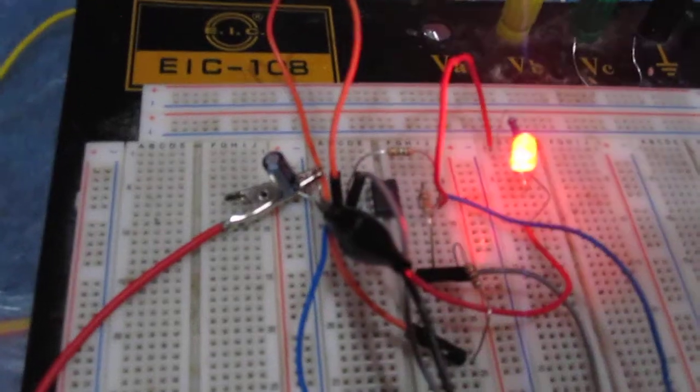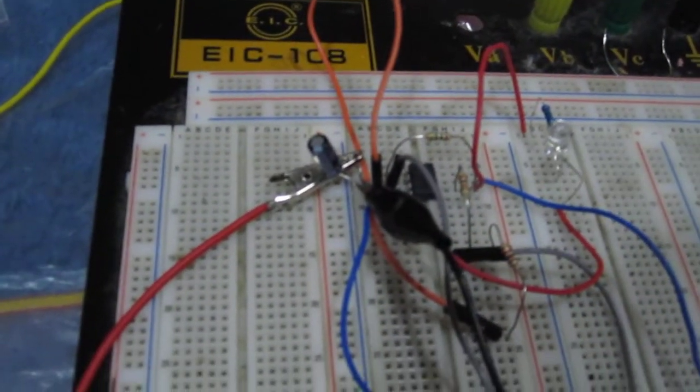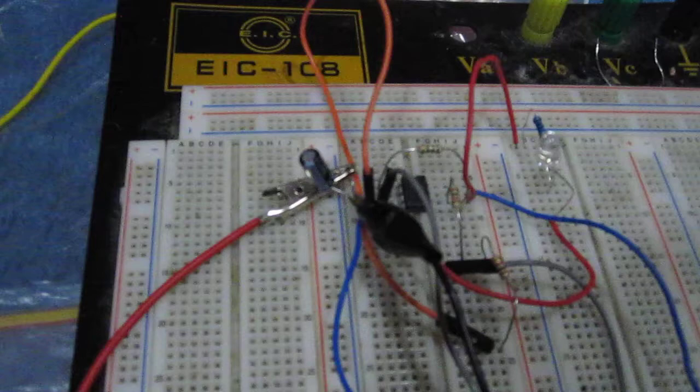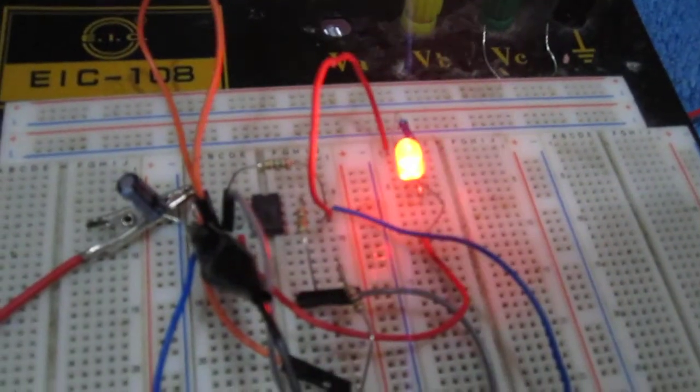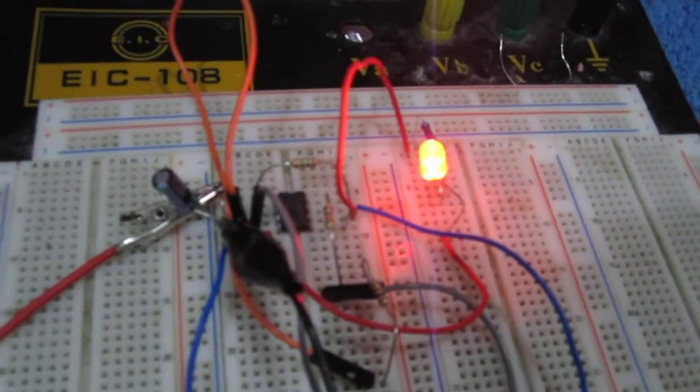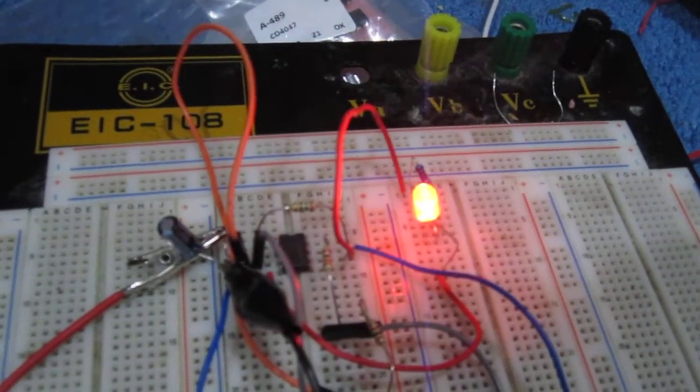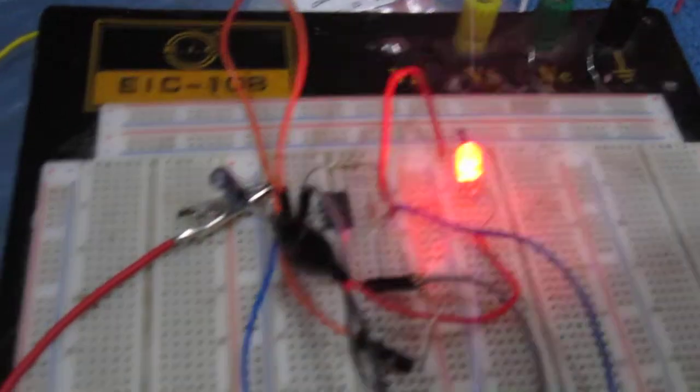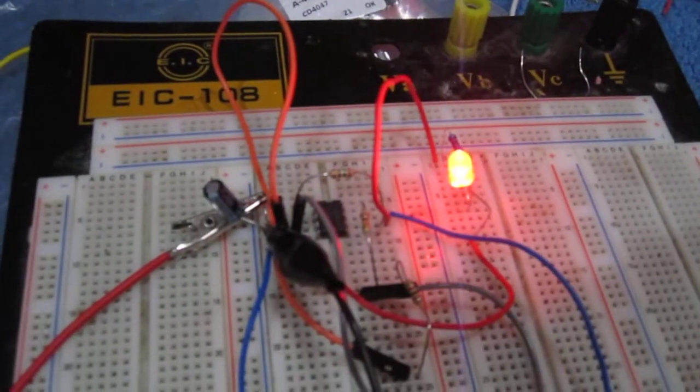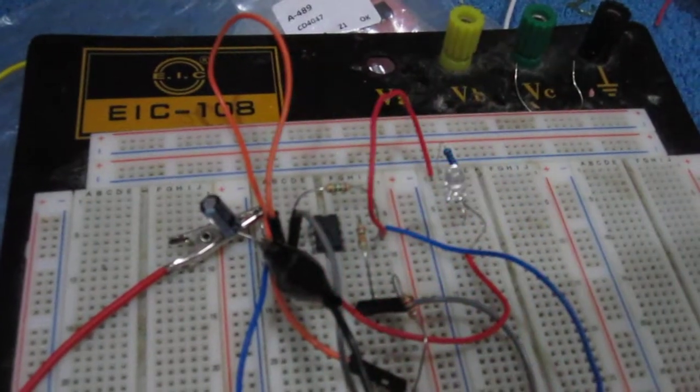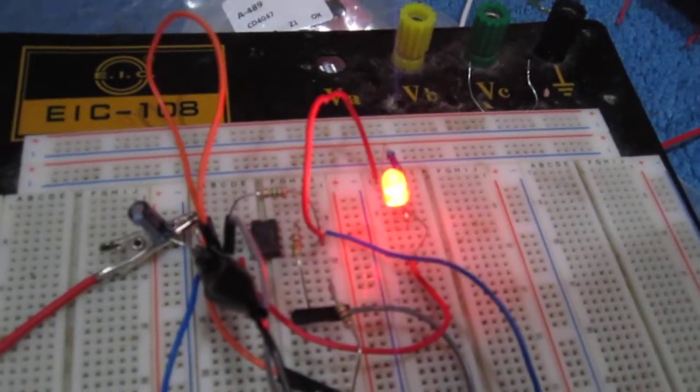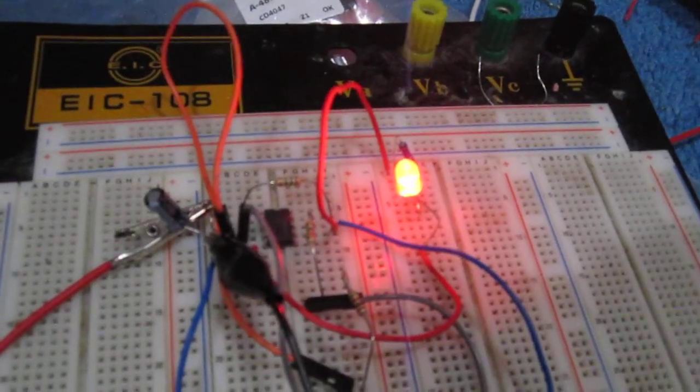The capacitor is constantly charging and discharging, so it switches the state of the output. To the non-inverting terminal we connect the reference voltage. When the capacitor charges above this voltage, output is low, and when the capacitor goes below this reference voltage, the output is high. So it's the constant charging and discharging of the capacitor that changes the state from on to off, high to low.